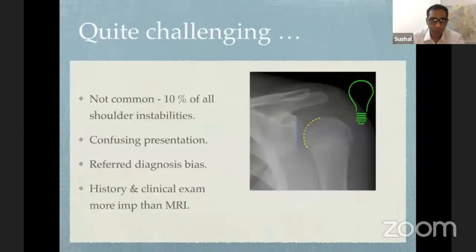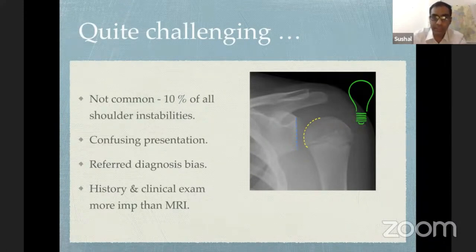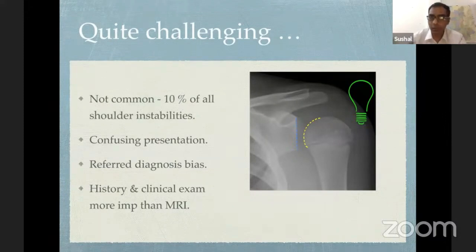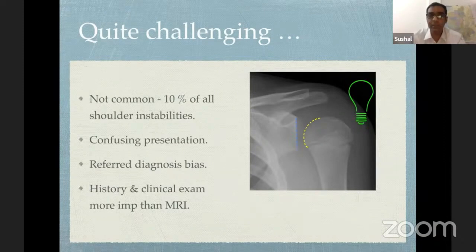Posterior instability is quite challenging even for some shoulder surgeons. Number one: it's not as common as anterior dislocations — they account to maximally about eight to ten percent of all instabilities. The presentation can be very confusing. Anteriorly, patients come with dislocation, apprehension, or frank instability. Some patients tell you they feel their shoulder is not stable, but the most common presentation will actually be pain.